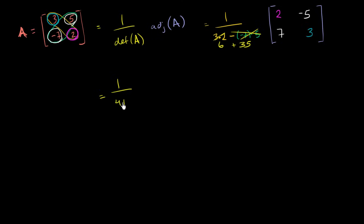We're going to take 1 over the determinant and multiply it times our adjugate. Times 2, negative 5, 7, and 3.